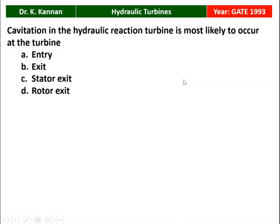The first question is from the 1993 question paper. Cavitation in a hydraulic reaction turbine is most likely to occur at which part of the turbine — either at entry, exit, stator exit, or rotor exit. For hydraulic reaction turbines, the Pelton turbine and Francis turbine are the reaction turbines.